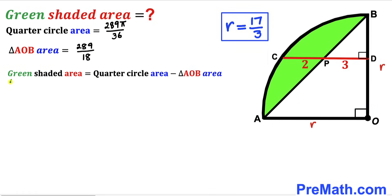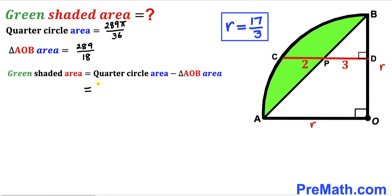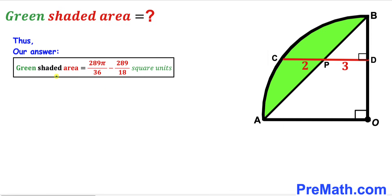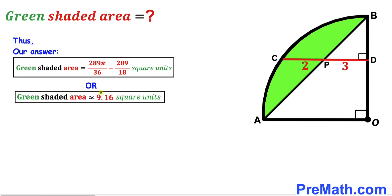In our final step, the green shaded area equals the quarter circle area minus the triangle AOB area. Substituting our values: green shaded area = 289π/36 − 289/18 square units, which is approximately equal to 9.16 square units. That's our final answer.